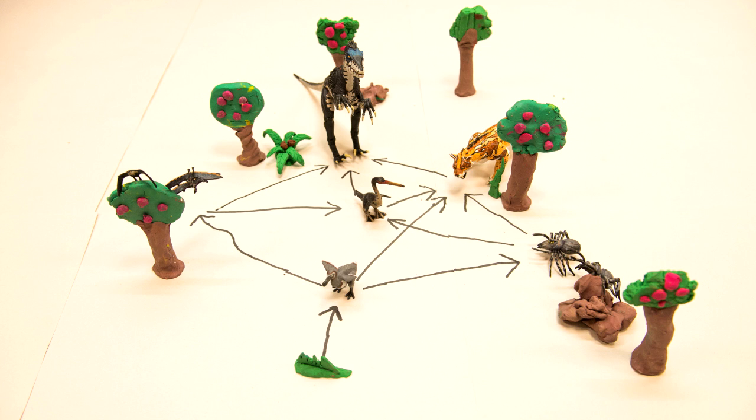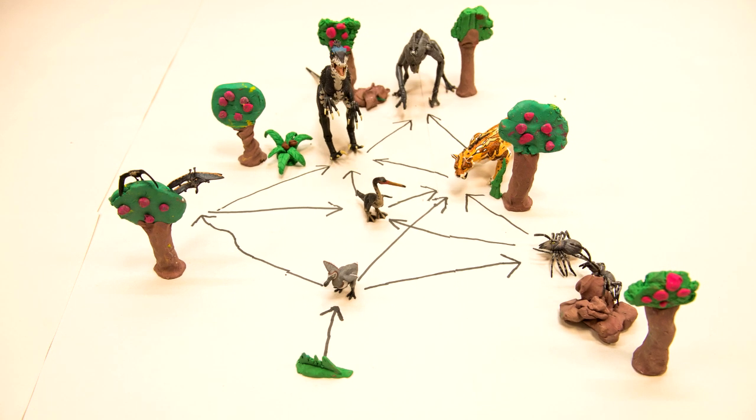But wait, that's not all. Here comes the future predator. He eats the Velociraptor and the saber-toothed tiger as well. And that's a food web.